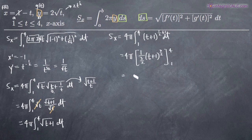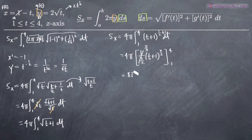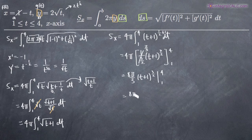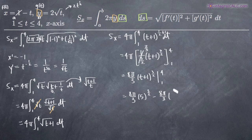Before evaluating, we simplify: one over three-halves becomes two-thirds. So two-thirds times four pi gives us eight pi over three, times t plus one to the three-halves, evaluated from one to four. Plugging in the upper limit four: four plus one is five, so we get eight pi over three times five to the three-halves. Then we subtract the lower limit: one plus one is two, so we subtract eight pi over three times two to the three-halves.